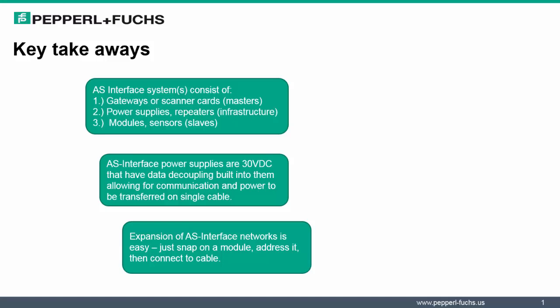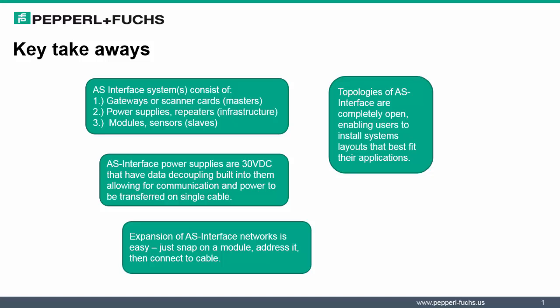A third part, as we talked about network expansion, is AS Interface's ability to expand very easily. By simply snapping in a module, addressing it, connecting it up while power is available on the network is very easily accomplished. We also spoke about the number of topologies supported by AS Interface. It's open, enabling it to be suitable for whatever application needs you may have.